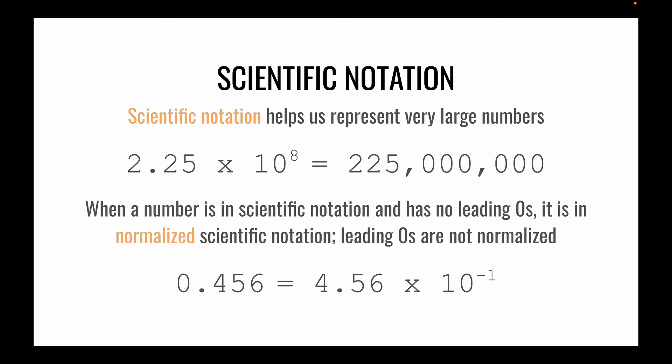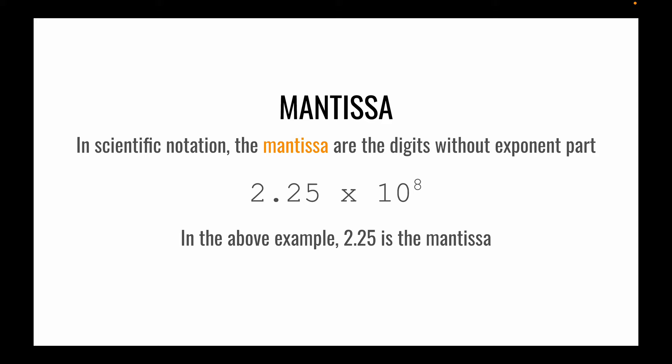Scientific notation helps us represent very large numbers, so 225 million in scientific notation is 2.25 times 10 to the power of 8. We'll be using the word mantissa a lot. A mantissa are the digits without the exponent part. So in 2.25 times 10 to the power of 8, 2.25 is the mantissa.